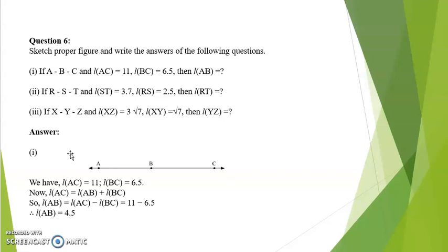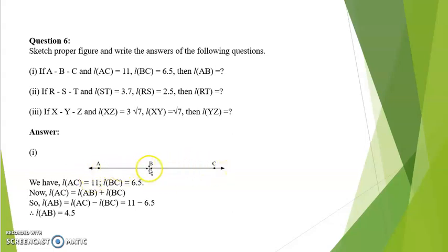Question number 6. Sketch proper figures and write the answers. First: A-B-C. Length AC is given as 11 and BC is given as 6.5. Length AC is equal to AB plus BC. Therefore AB would be AC minus BC, that is 11 minus 6.5. The answer is 4.5.